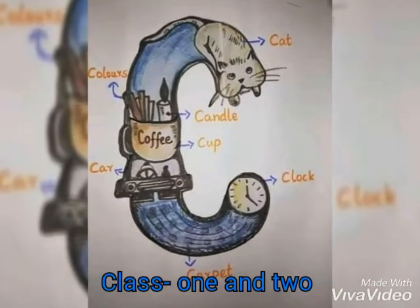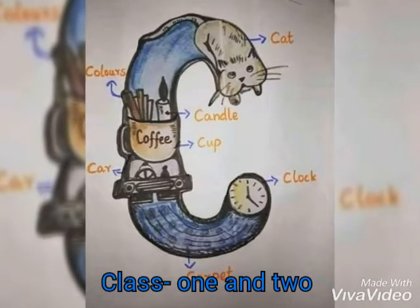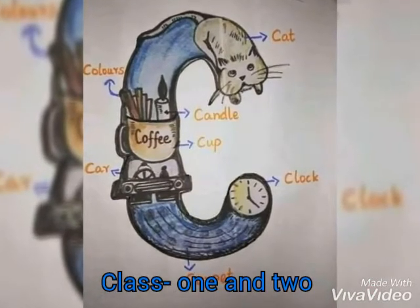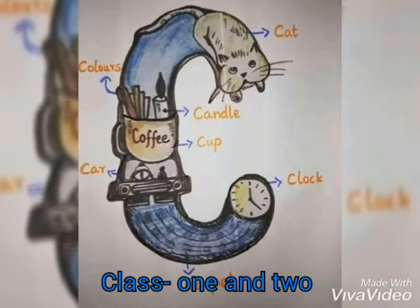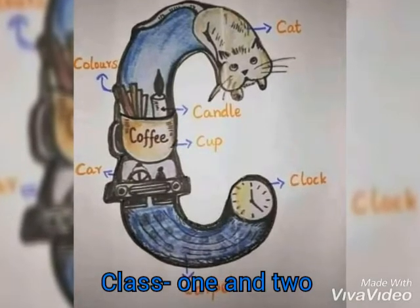C for cat, cat means viral. C for cup, cup means piala.